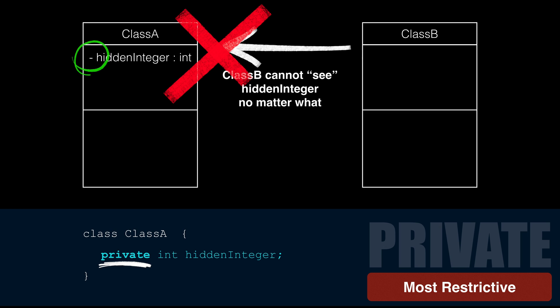You can always relax access later, but it's very difficult to rewrite code to make a method or attribute more restrictive. So always start with private.